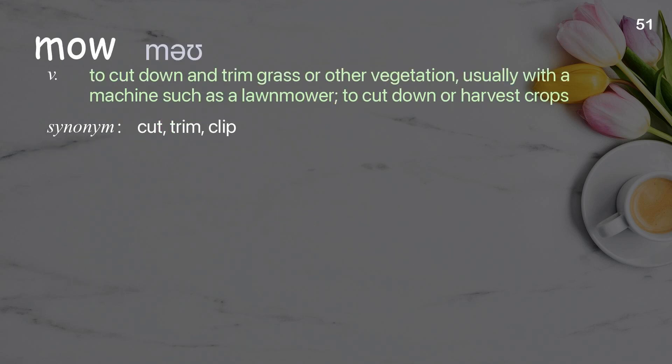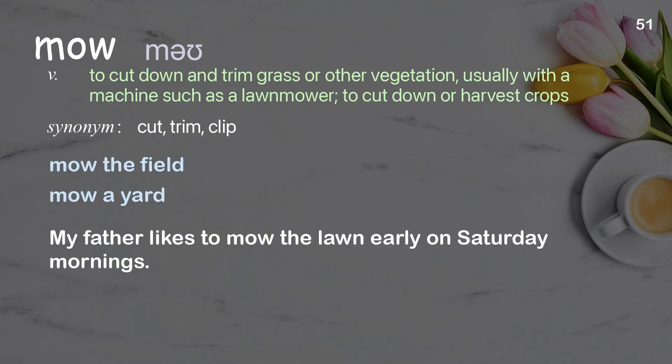Mow: to cut down and trim grass or other vegetation, usually with a machine such as a lawnmower; to cut down or harvest crops. Examples: mow the field, mow a yard. My father likes to mow the lawn early on Saturday mornings.